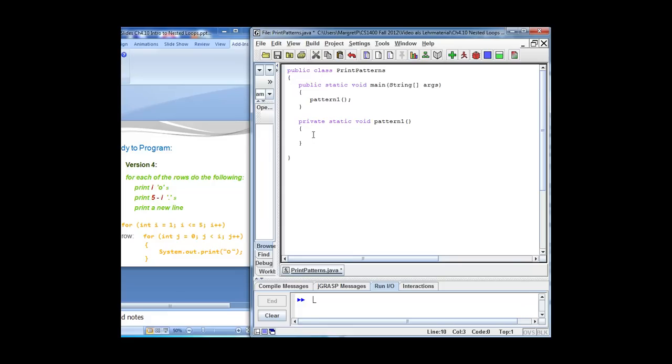So I'm doing just that. I say for, integer i is 1, i is less or equal 5, i plus plus. And now inside the body of my for loop, there are three things I'm going to do. The first thing is print i circles.